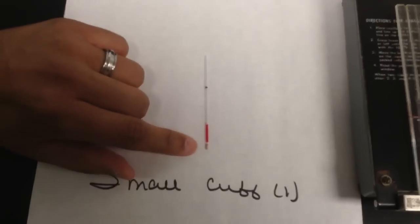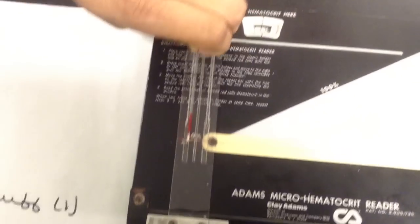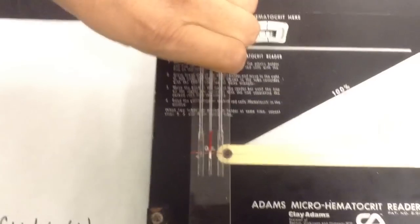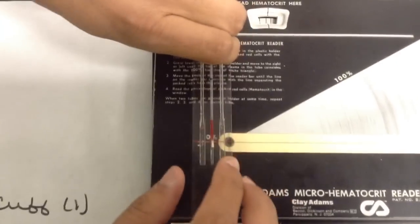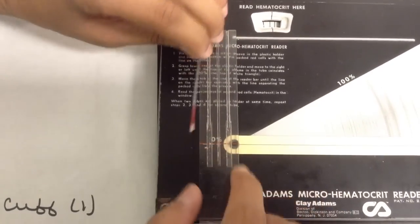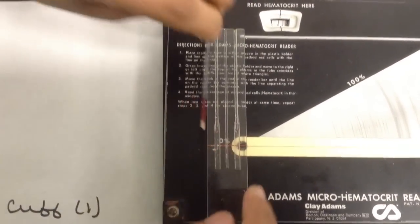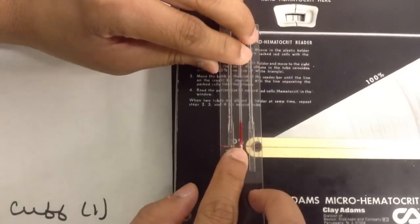So to read this, you put this here and you measure with the red line. You see the red line right there. You put this part, the red line, and you match the red line and you align it.